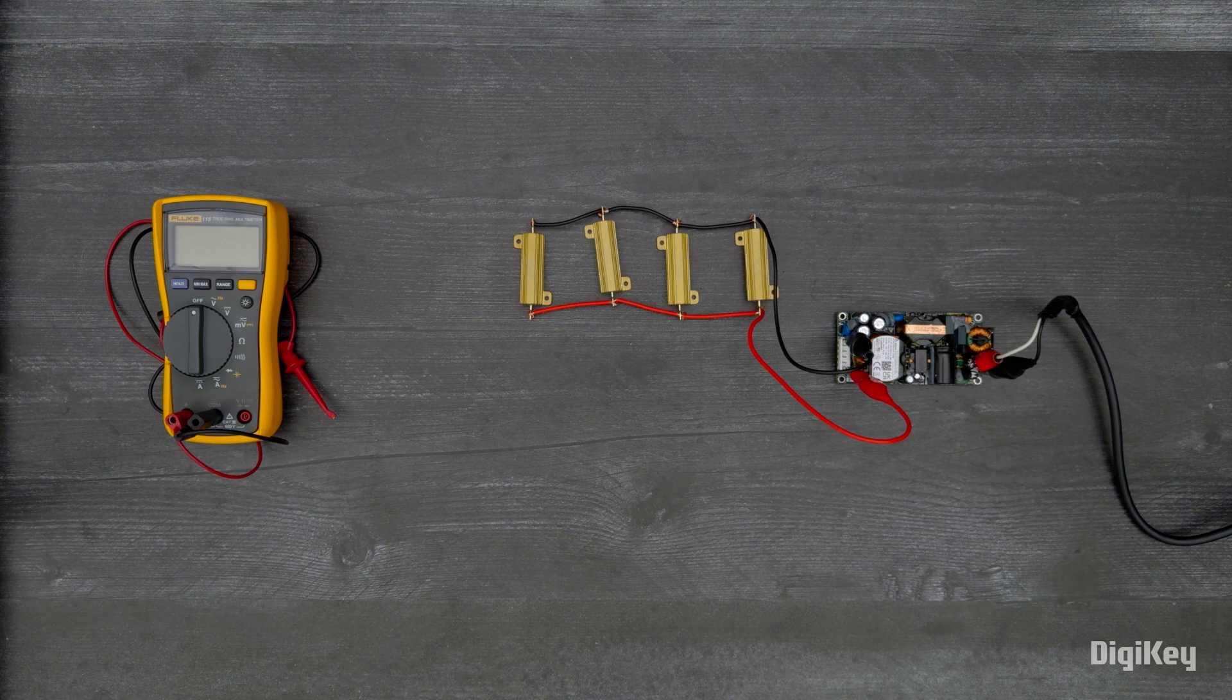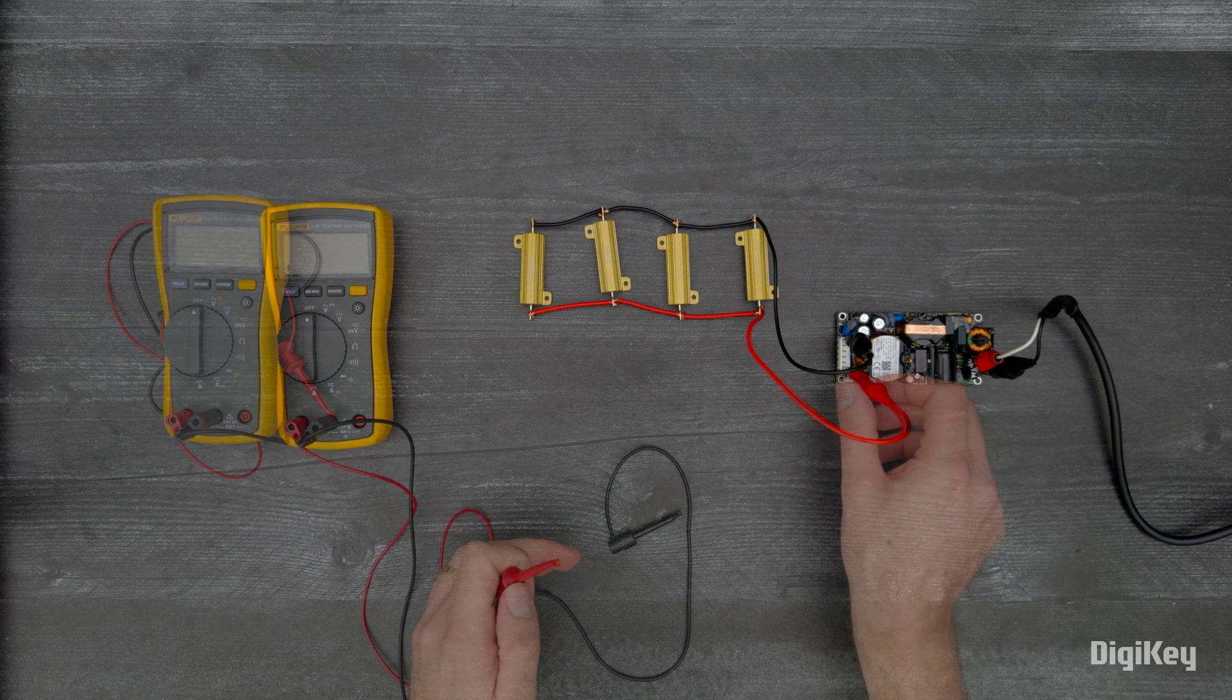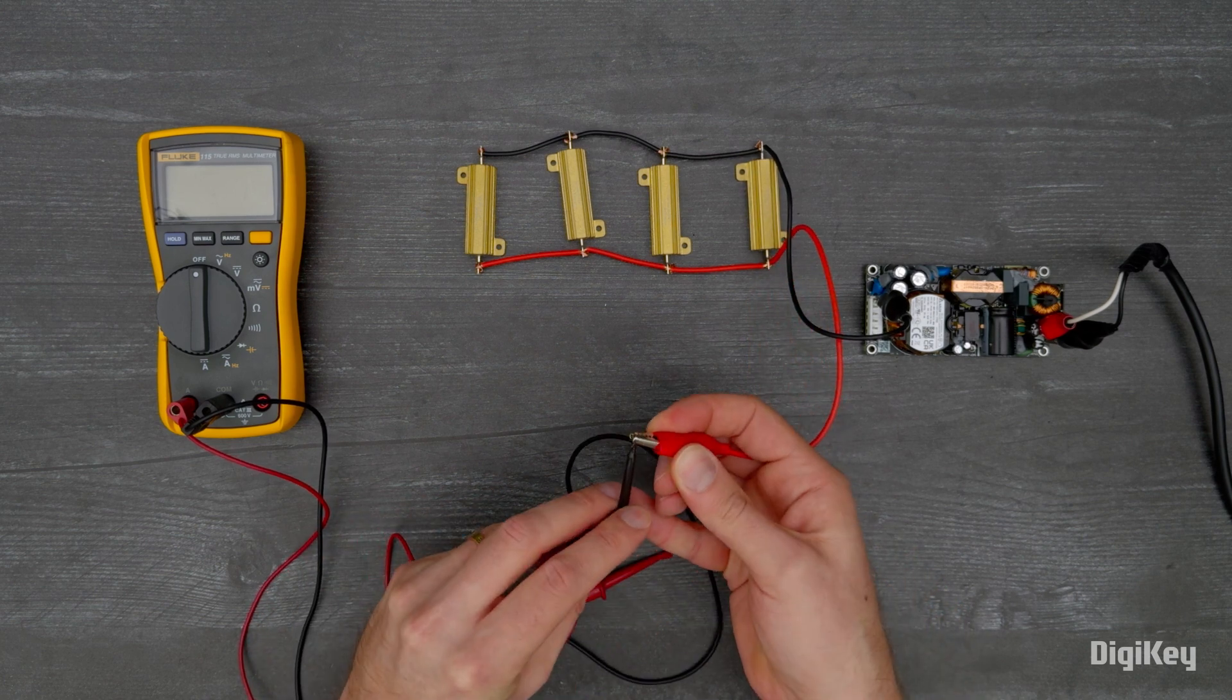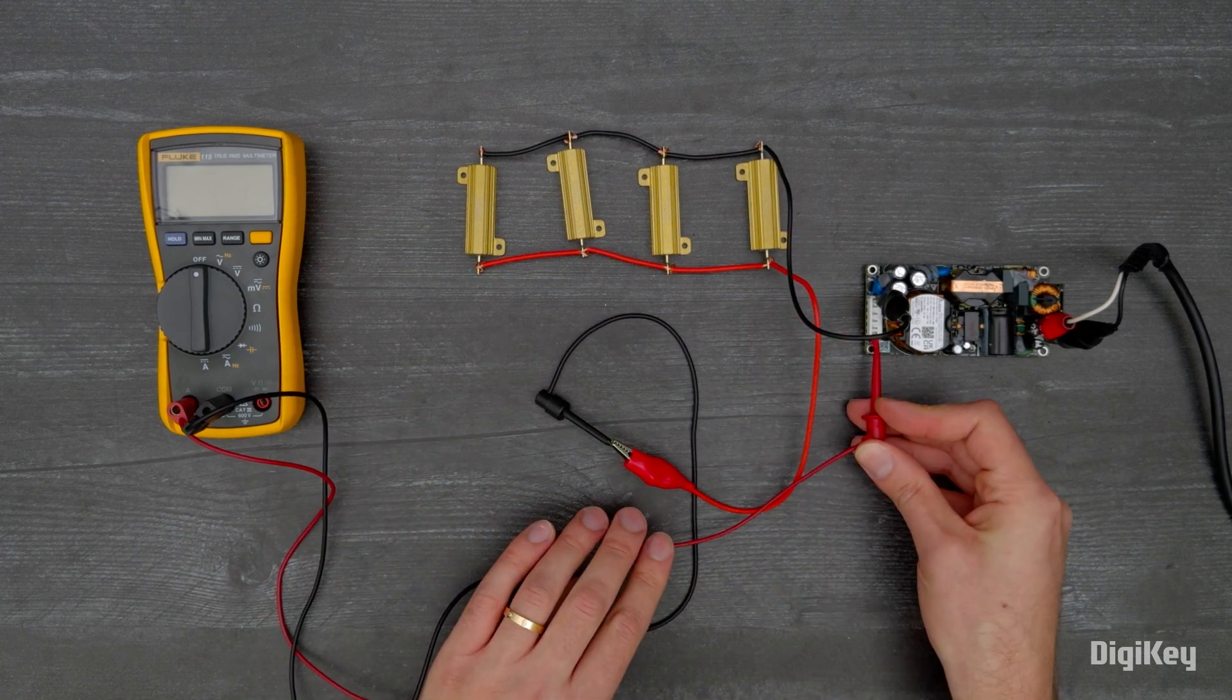To measure the output current, disconnect the input, then disconnect the pin four connection on the output connector. Now connect a DC ammeter in series.